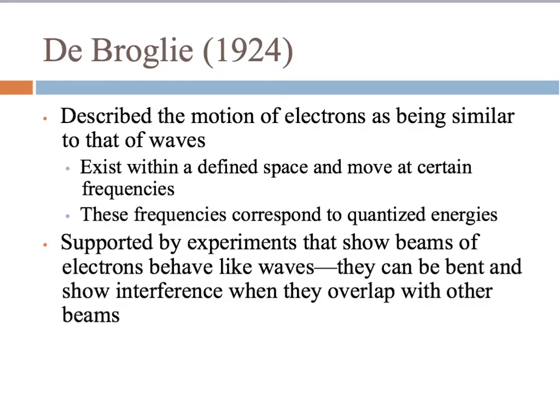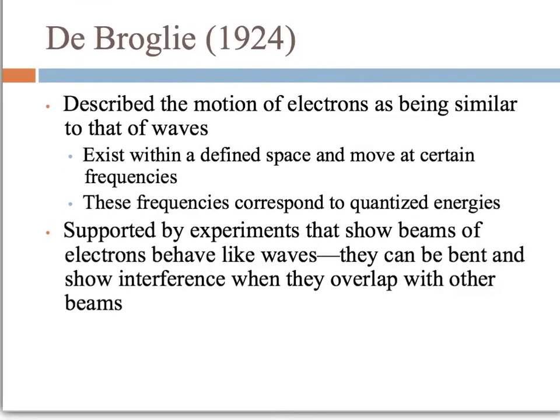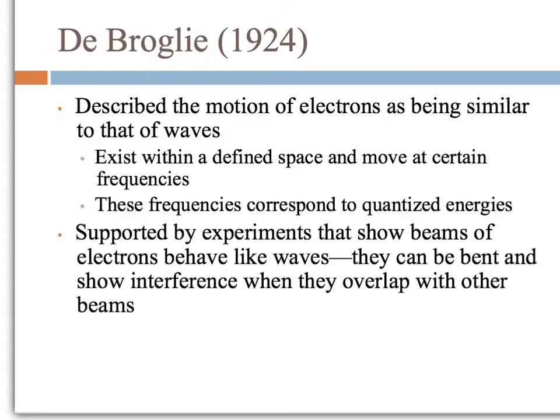This is the second lecture for Chapter 4. We're talking about electrons and the motion of electrons primarily. Where we left off was looking at Bohr's experiments and some of the ways in which Bohr was correct and some of the ways in which Bohr was not correct.